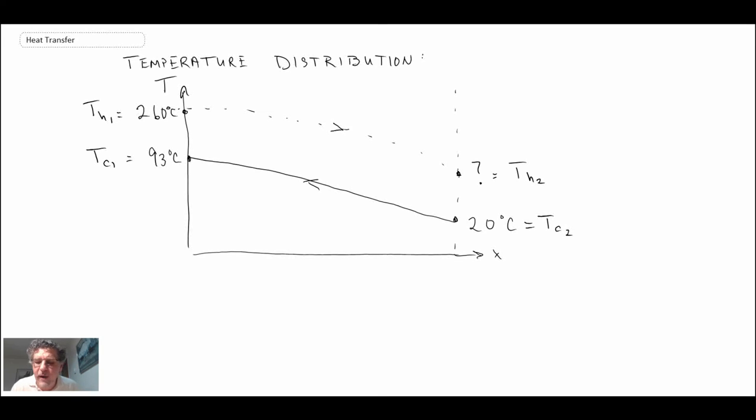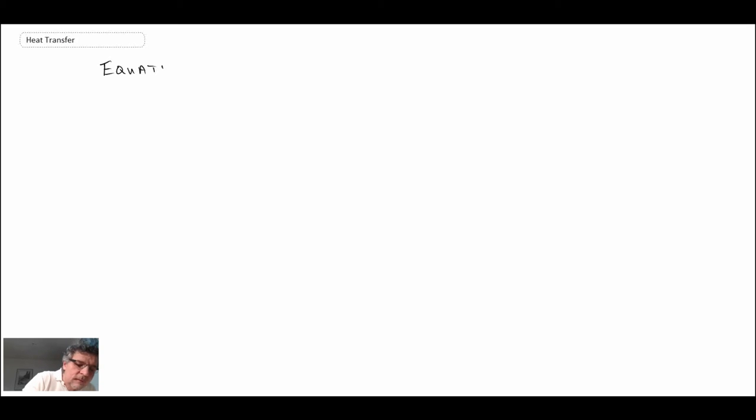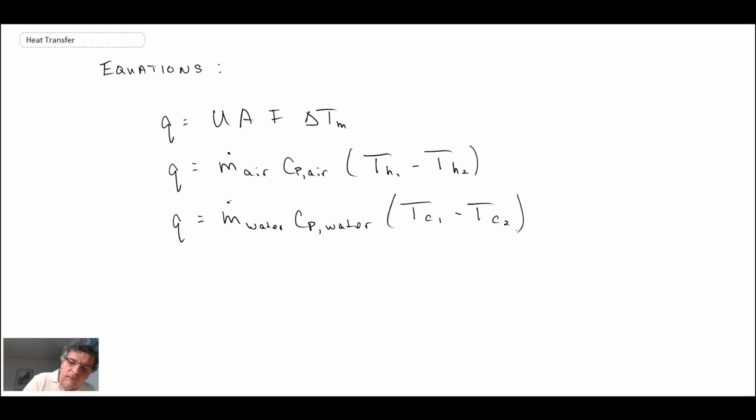So that's a bit of a problem. We don't know what that temperature is on exit. Let's take a look now at what equations we have that we can work with. Okay, so those are the equations that we have. Now, what do we know here? We know U. We were told the area A. We don't know F because we don't know one of the temperatures on the exit for our hot fluid, and we don't know delta Tm. We can't evaluate that because we need that exit temperature.